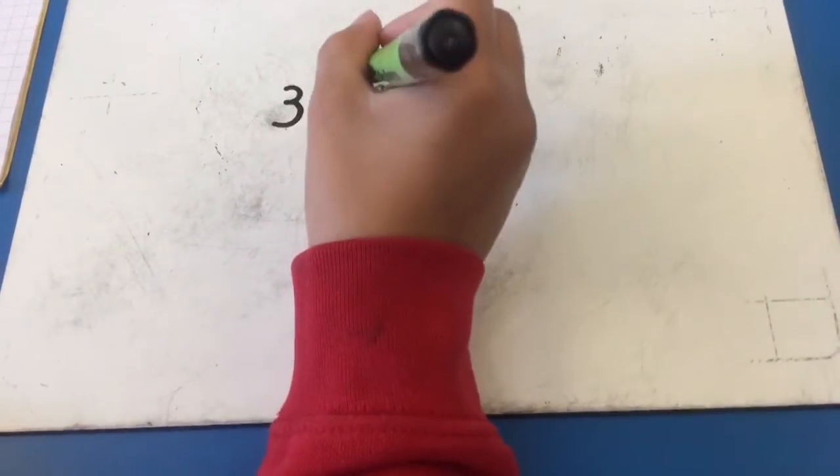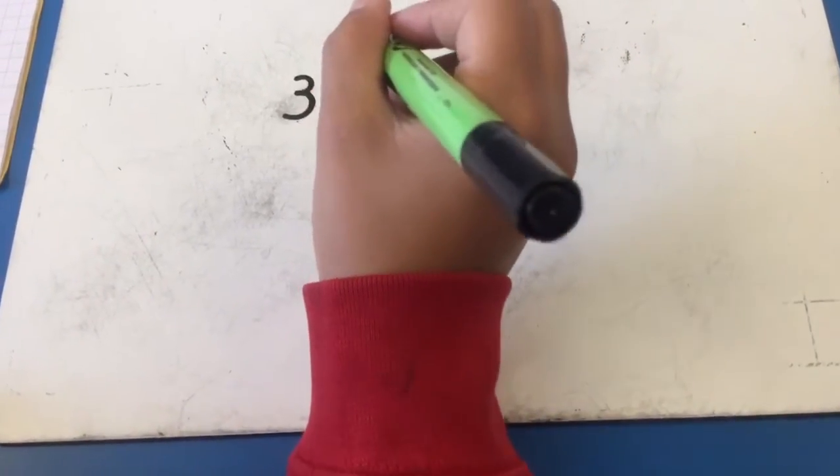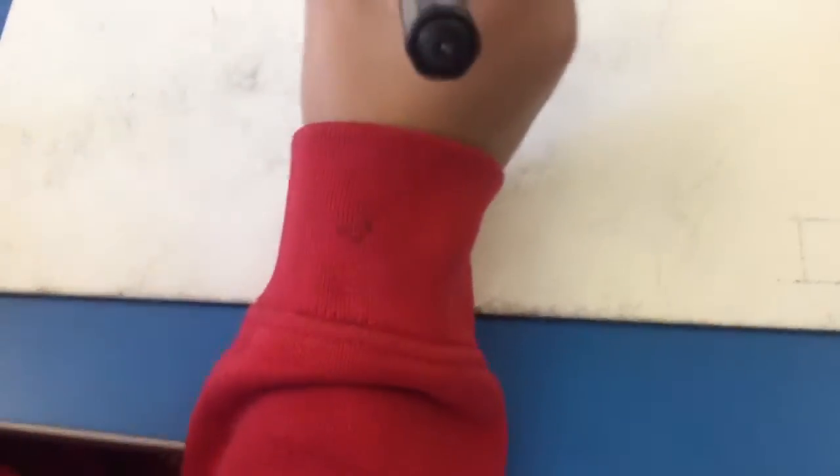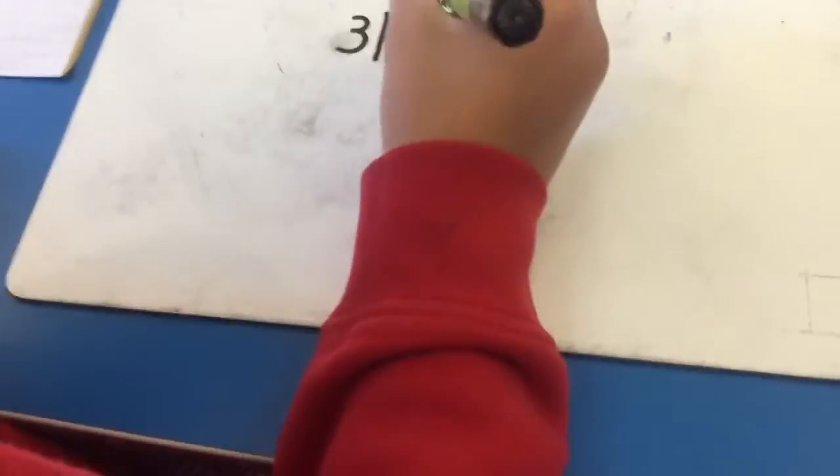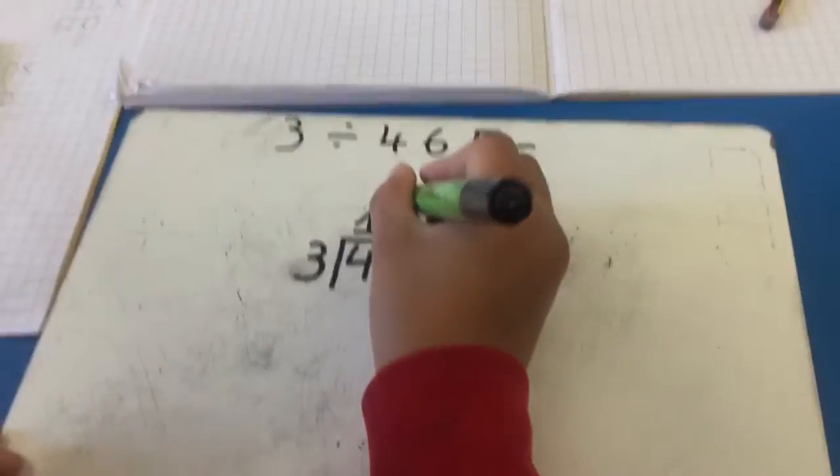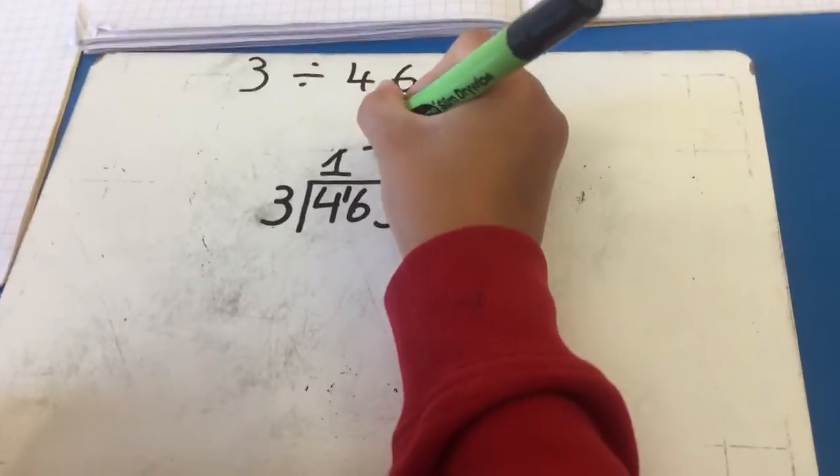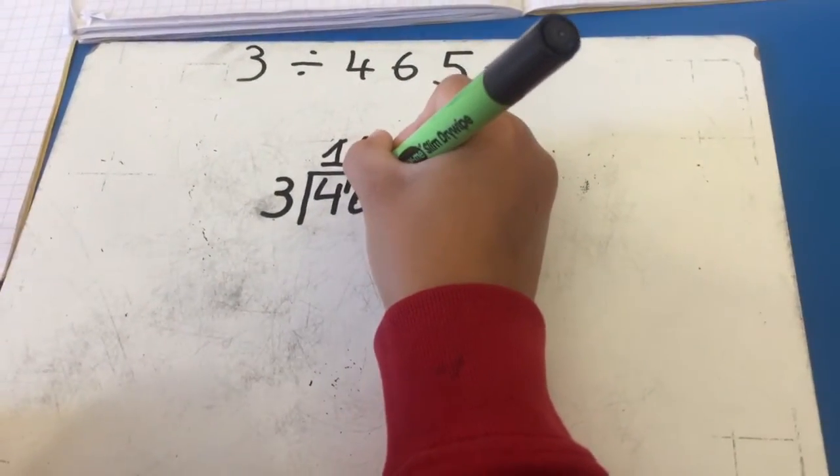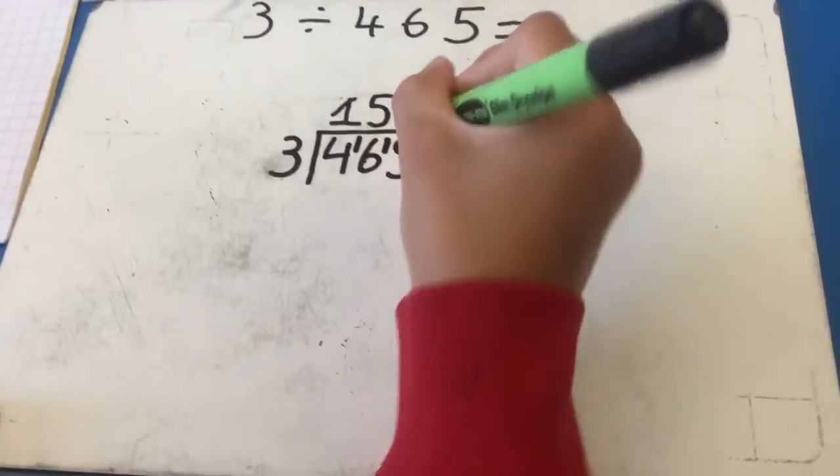Now, we do how many 3s are in 16, which is 15, because there is no 16 in the 3 times tables. And then, we put the 5 here, and we carry the 1 between the 6 and the 5.